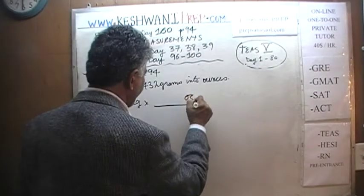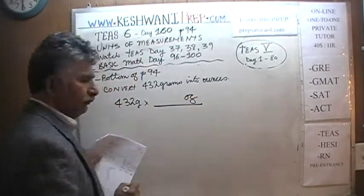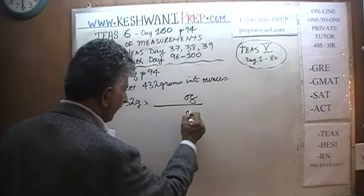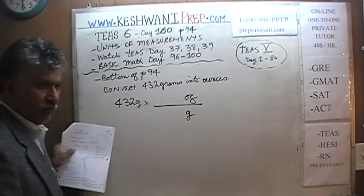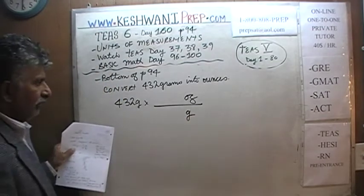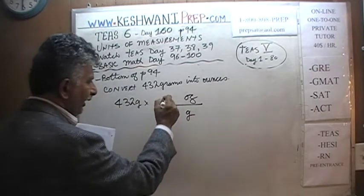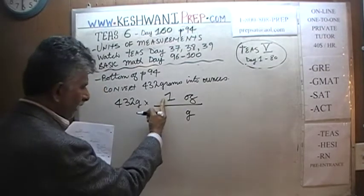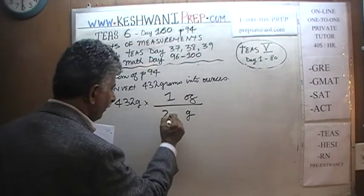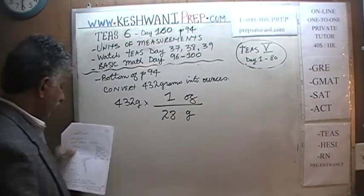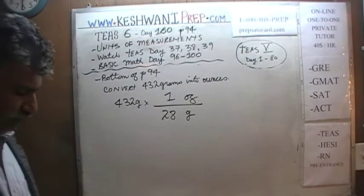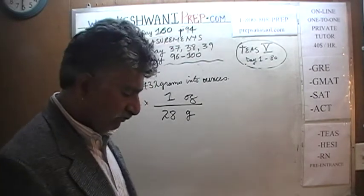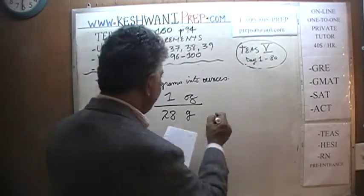We want the ounce on the top and we want to get rid of the grams — the grams are going to go on the bottom. Now the question is: how many grams in one ounce? One ounce is made up of 28 grams. This is called the conversion factor — this is something you simply have to know by heart.